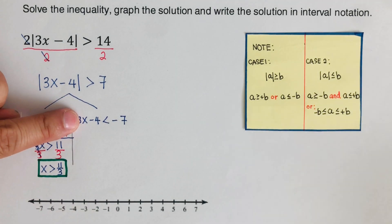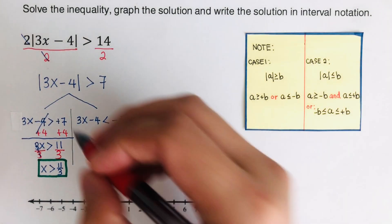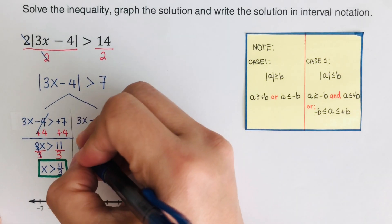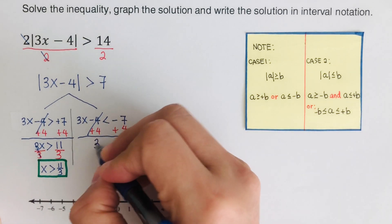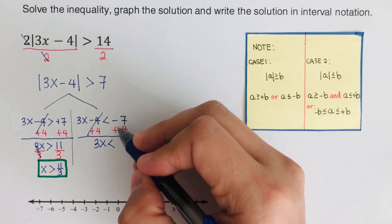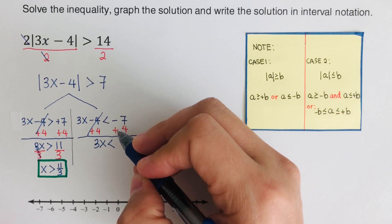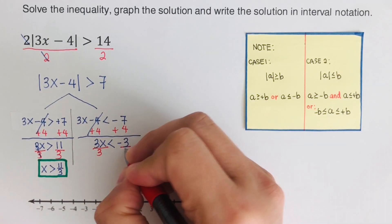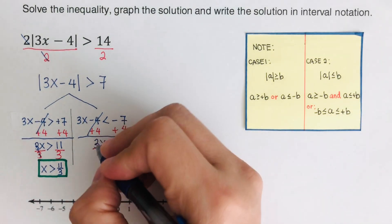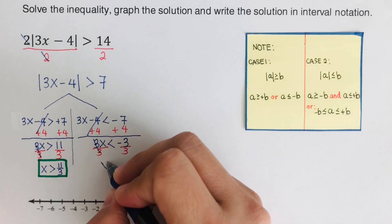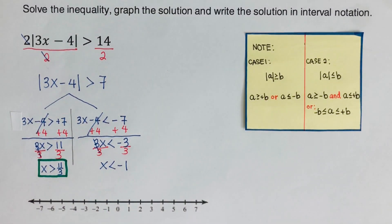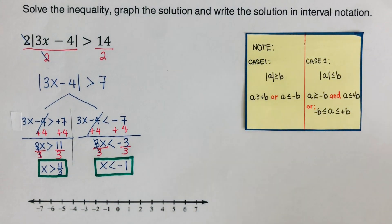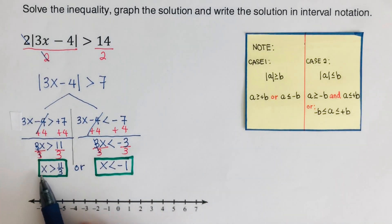For the second inequality, three x minus four is less than negative seven. Adding four to both sides gives three x is less than negative three. Dividing both sides by three, the second solution is x is less than negative one. These two solutions are joined by the conjunction 'or'.